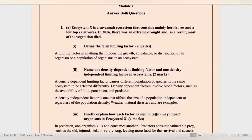Part two: name one density-dependent limiting factor and one density-independent limiting factor. I have placed the definitions here and also examples of each. For density-dependent factors, these would include the availability of food, parasitism, and predation. For density-independent factors, this would include natural disasters.